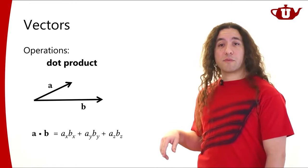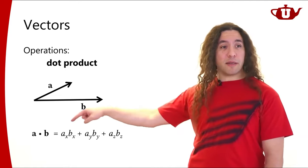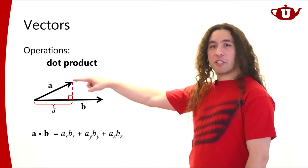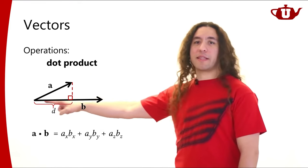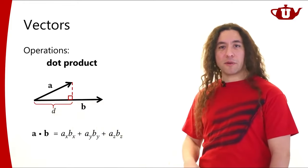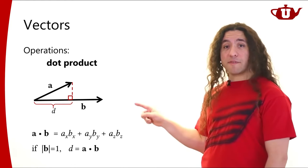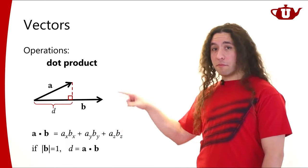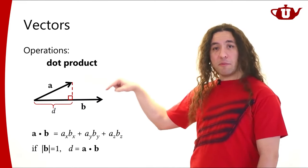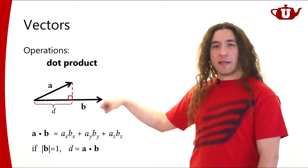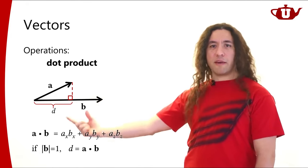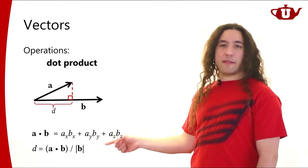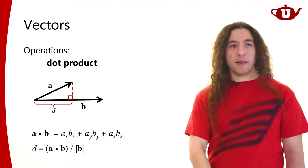The dot product is a very important operation. The dot product of two vectors gives us a scalar value, computed by multiplying together the components. We can figure out the projection of one vector onto another — if vector b is a unit vector (length one), then the length of the projection d equals a dot b. If b is not a unit vector, you divide the dot product by the length of b. We also use the dot product to determine the angle between two vectors: the dot product equals the cosine of the angle multiplied by the lengths of the two vectors.